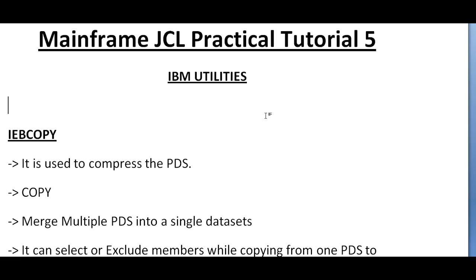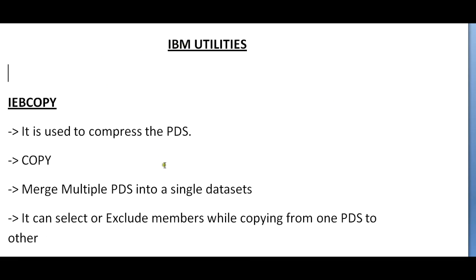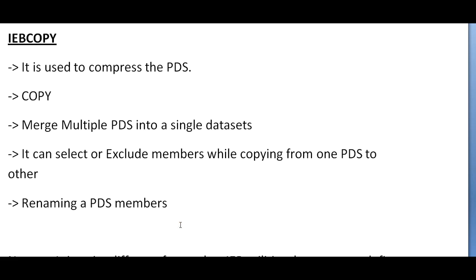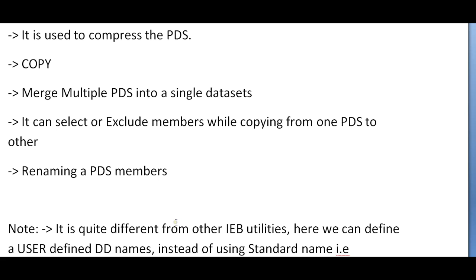IEBCopy is used for many purposes. One important purpose is it can compress a PDS file. It is used to copy PDS members from one PDS to another PDS. It can merge multiple PDS into a single data set. It can select particular members and copy to another PDS, or it can exclude particular members while copying. We can also rename a PDS member.